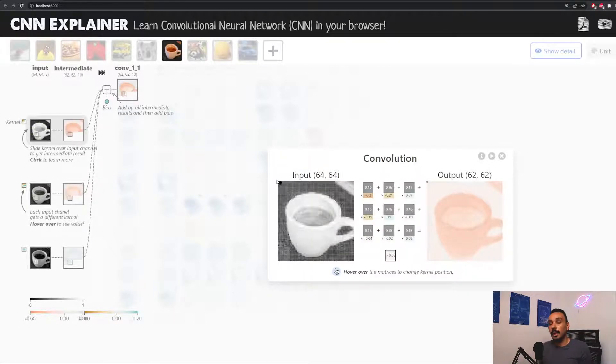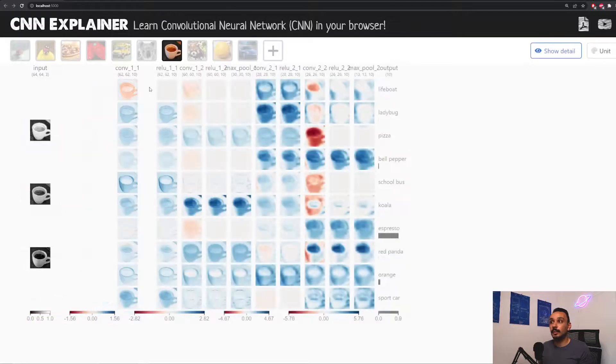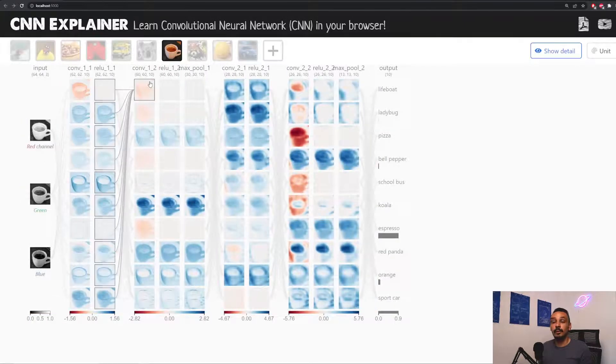When we look at the kernel, we cannot basically extract information from this first column and the first row over here, because there are basically no pixels before them that we can sum together with them. And that means we will have to lose the first row and the first column from each photo. And that's basically why we lose 2 pixels. Remember that this effect will repeat every time you do a convolutional layer.